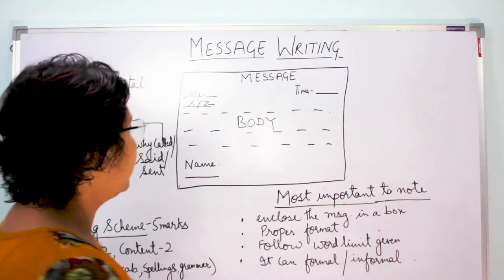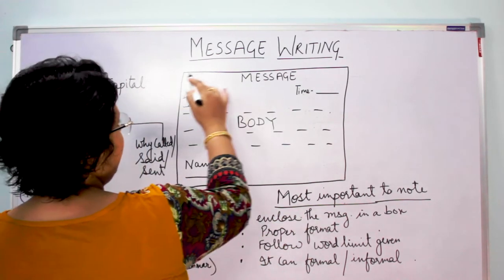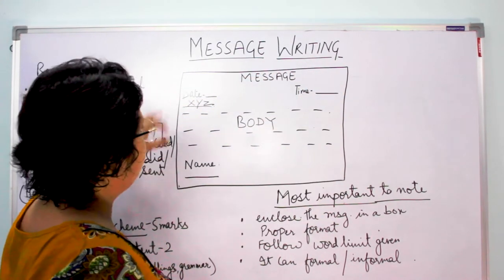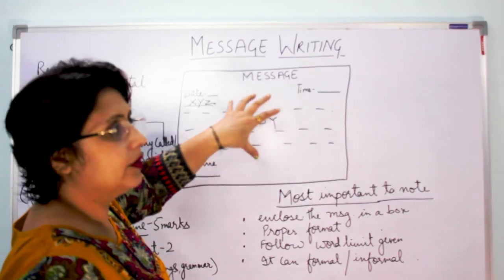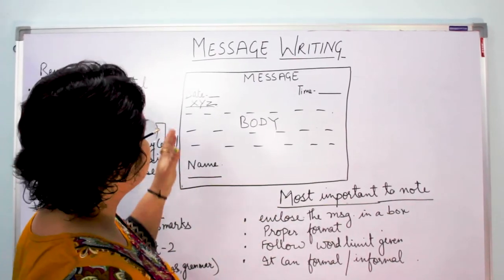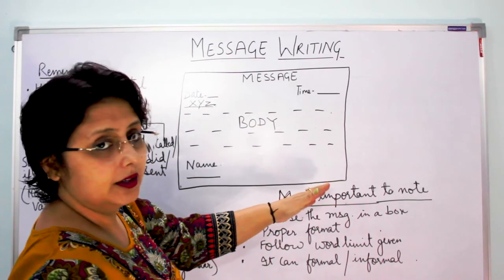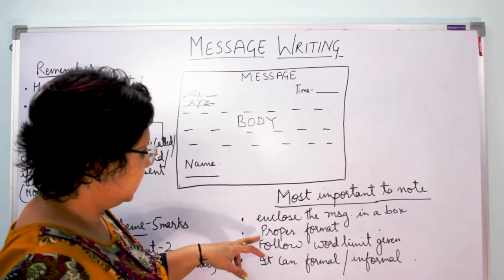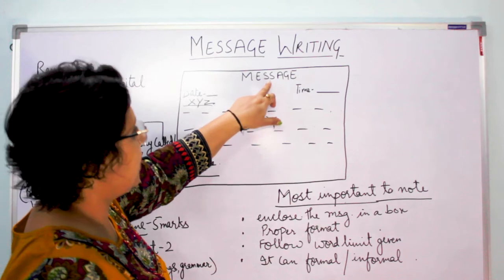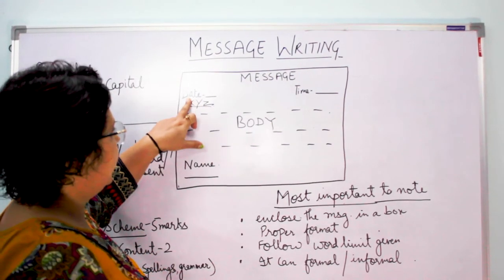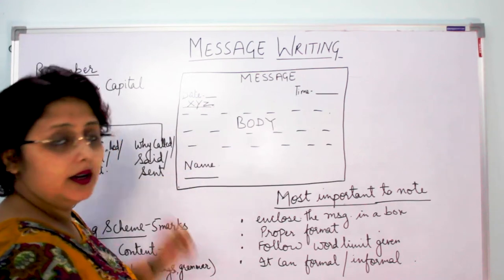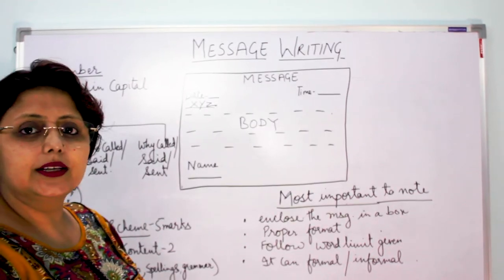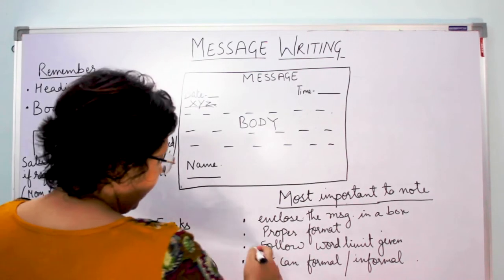One very important thing: whenever you are writing a message, you have to cage it — meaning make a box around it. If you make a box and put the message in it, it gives a good look and it is actually required as part of your formatting. The format is: MESSAGE in the middle in capitals, then date on the left, time on the right, then the body, and then the name — keep this in proper order, otherwise marks will be deducted.